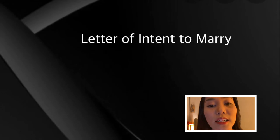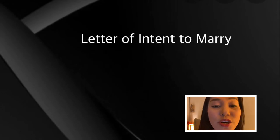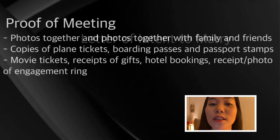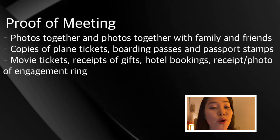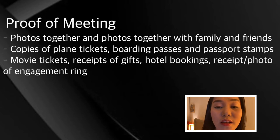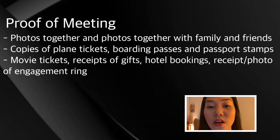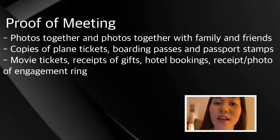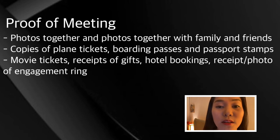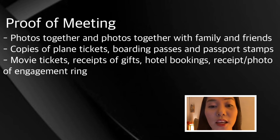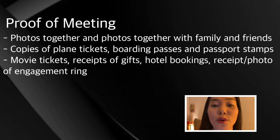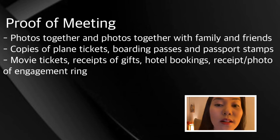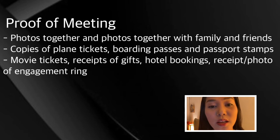Number four, letter of intent to marry. Both the petitioner and beneficiary will provide a letter intending to marry each other within 90 days. Number five, proof of meeting. These are the supporting documents to describe how and when you and your fiancé or fiancée met during the past two years. The evidence can include photos together, and photos together with family and friends, copies of plane tickets, boarding passes when you visited your fiancé or fiancée, copies of your passport showing stamps from your travels, movie tickets, receipts of gifts for each other, hotel bookings, receipt of engagement ring, or photo of the engagement ring.